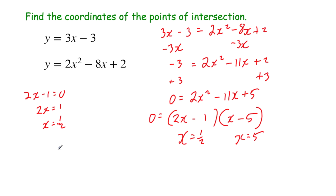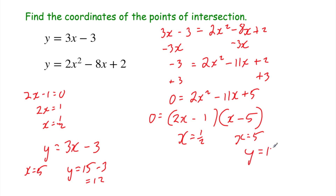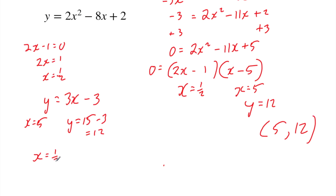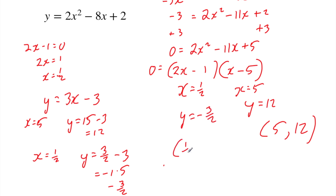Now let's find the y coordinates using y equals 3x minus 3. When x equals 5: y equals 3 times 5 minus 3, which is 15 minus 3, so y equals 12. That gives the coordinate (5, 12). When x equals one half: y equals 3 times one half minus 3, which is three halves minus 3, so y equals minus 1.5, or minus three over two. That gives the coordinate (½, −1.5), or equivalently (0.5, −1.5).